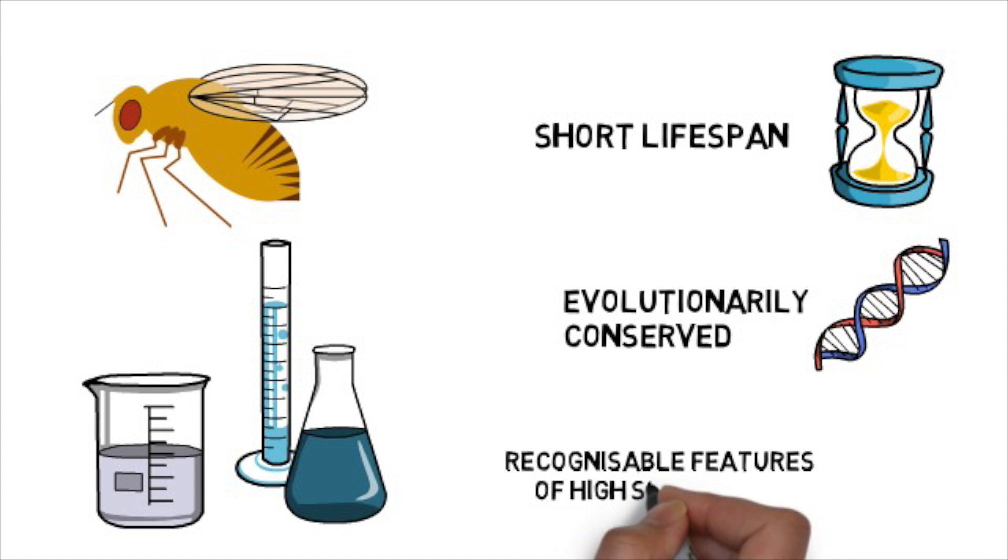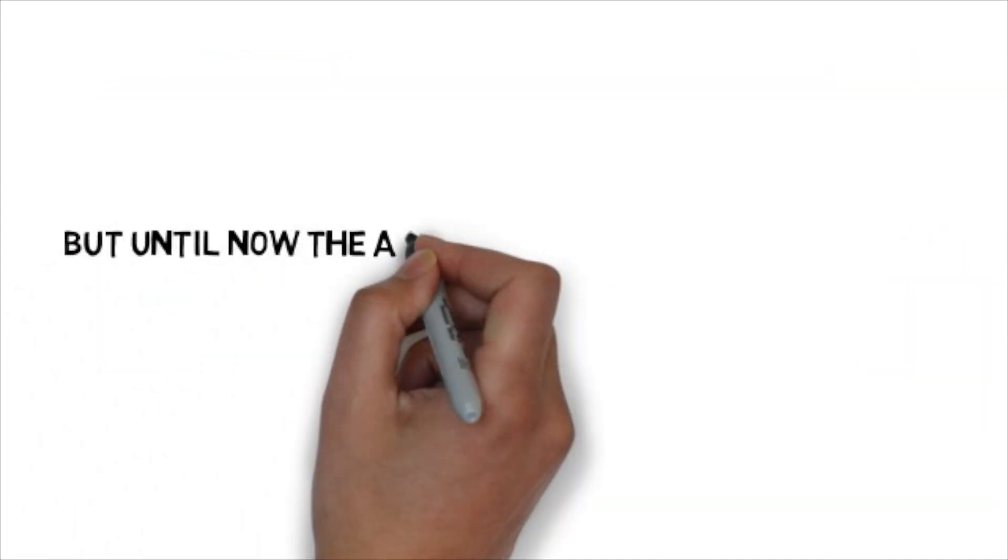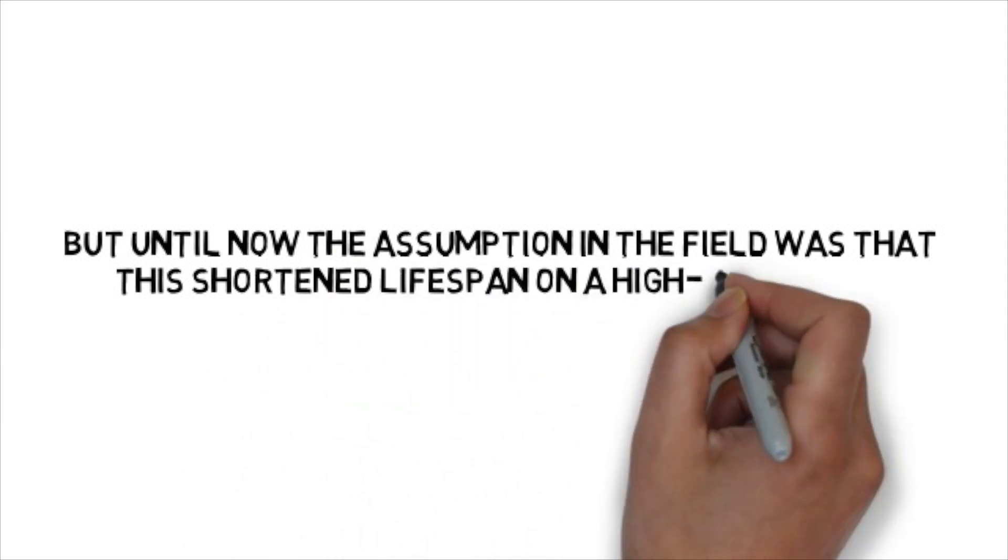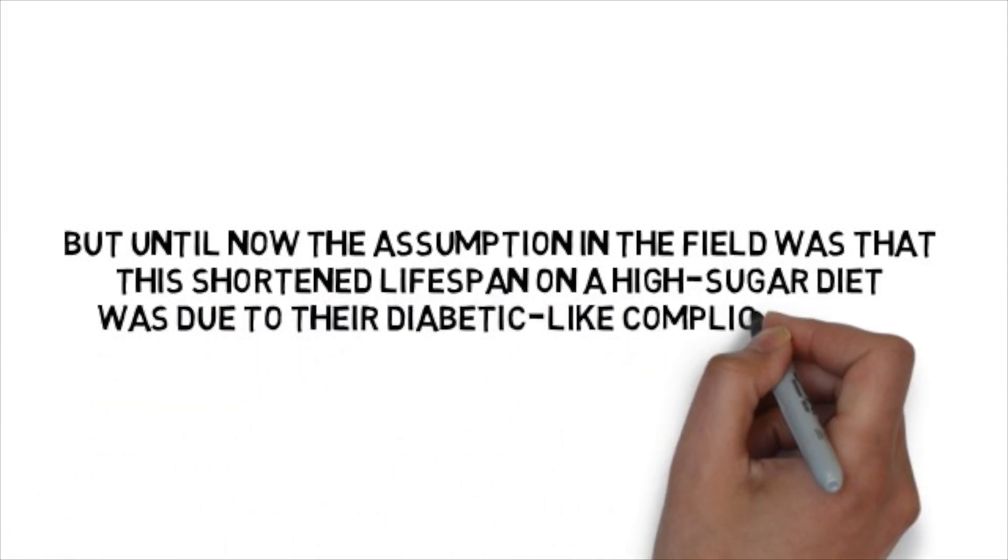Importantly they develop many recognizable features that are associated with high sugar diets including obesity as well as a reduced lifespan. But until now, the assumption in the field was that this shortened lifespan on a high sugar diet was due to their diabetic-like complications.